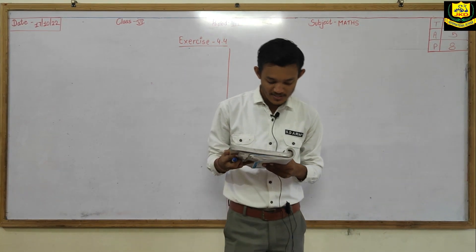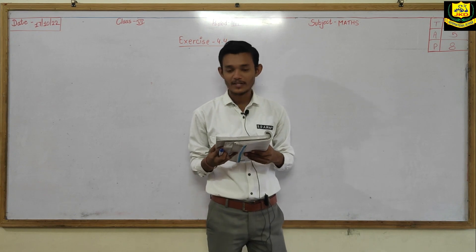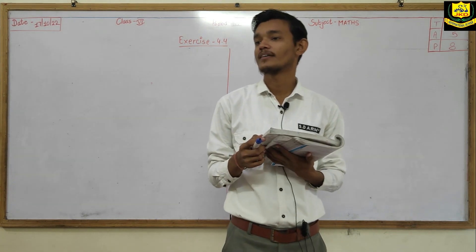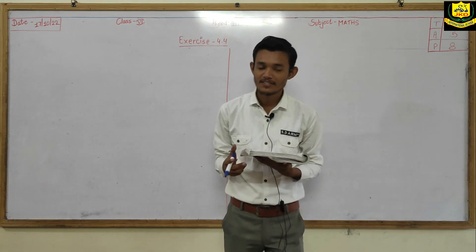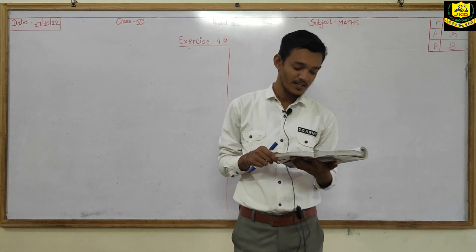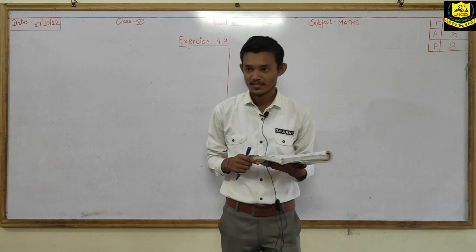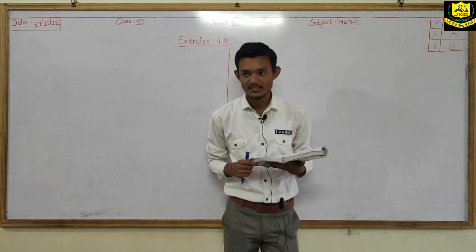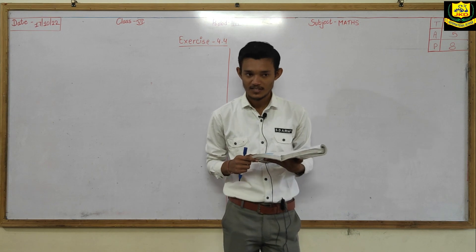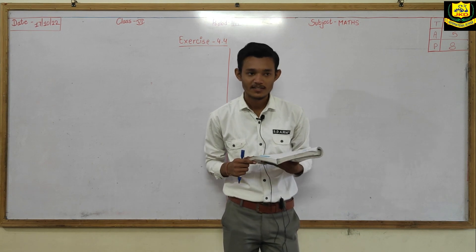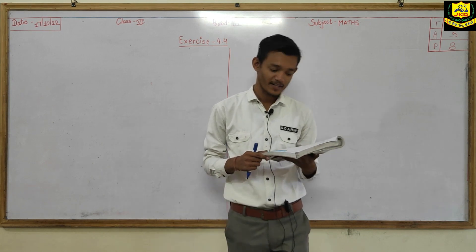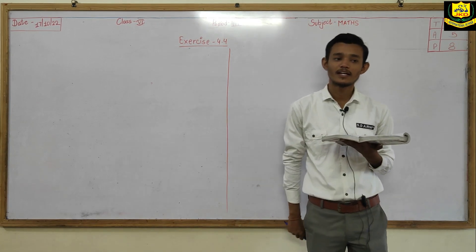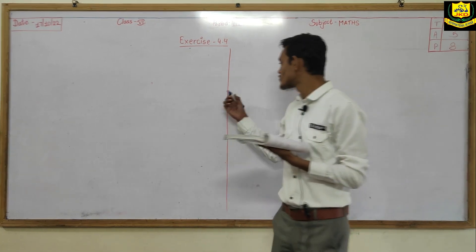Question number 1 says: draw a rough sketch of a triangle A, B, C. First of all we have to make a triangle. How many sides does a triangle have? 3. And how many vertices does a triangle have? Vertices means the corners. The number of corners in a triangle is 3. So first of all we have to make a rough sketch of triangle A, B and C. Let us draw.